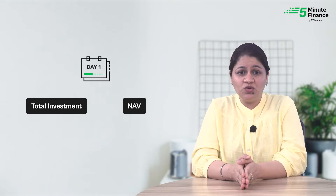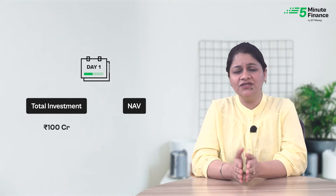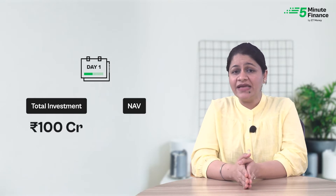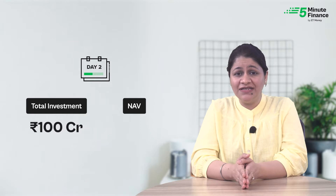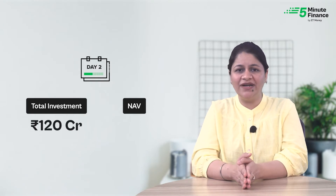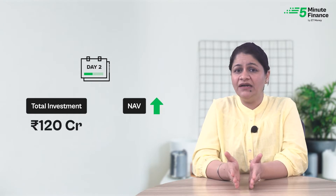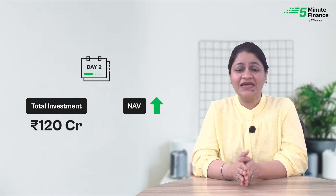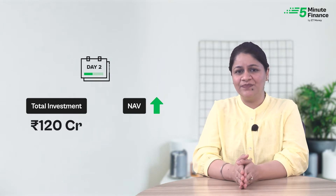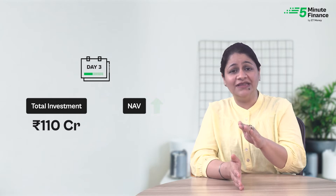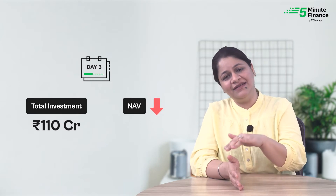For instance, if the total investment in a mutual fund scheme is Rs 100 crore, the next day the value of these securities may become Rs 120 crore. This will in turn increase the NAV. Similarly, if the total value of securities falls, the NAV can decline.